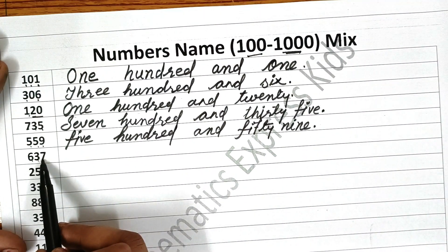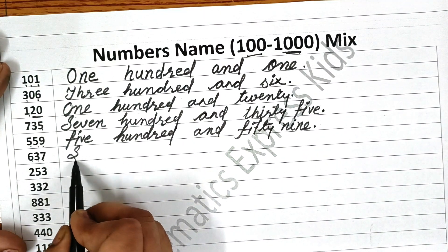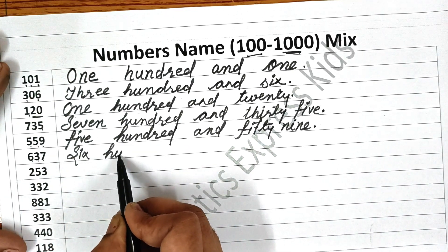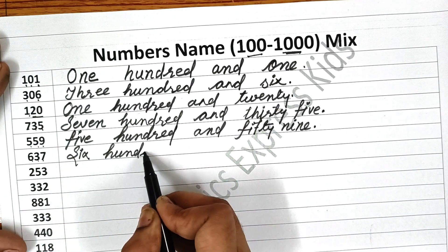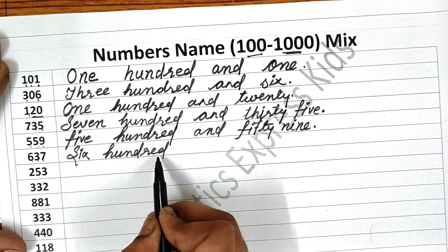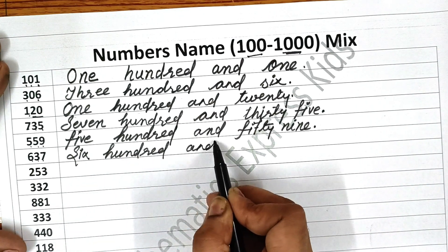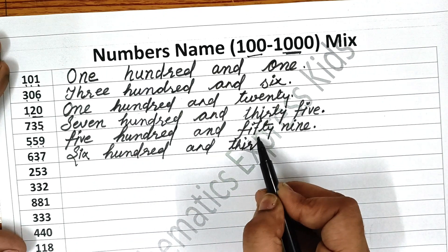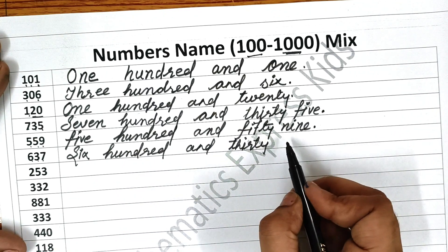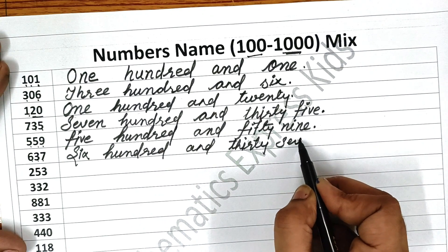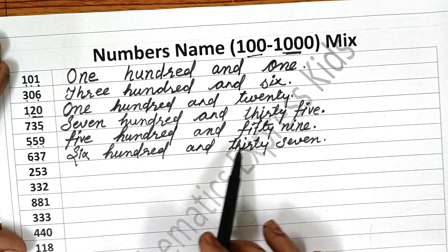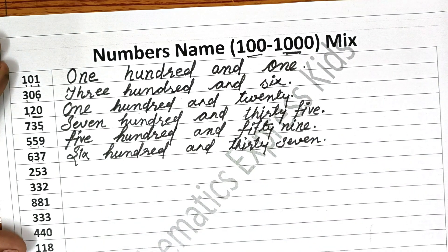The next one is six hundred and thirty-seven. Write six — S-I-X — six hundred — H-U-N-D-R-E-D — and thirty — T-H-I-R-T-Y — seven — S-E-V-E-N. Six hundred and thirty-seven.